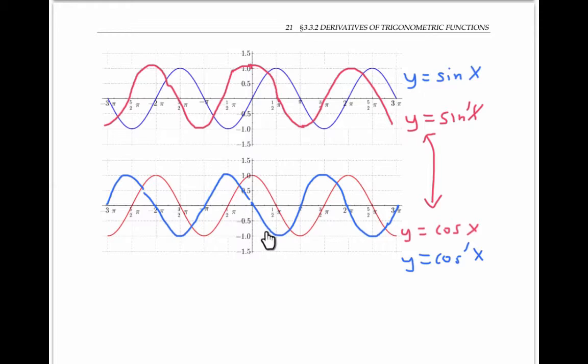This new blue graph looks like the vertical reflection of the blue graph above, suggesting that the derivative of cosine of x is equal to the negative of sine of x.